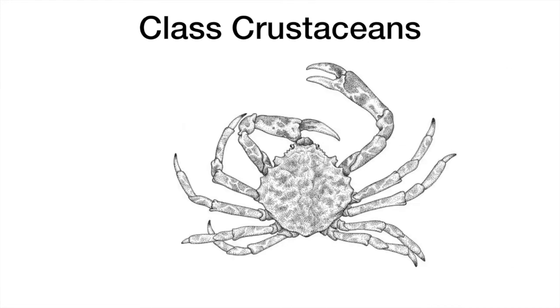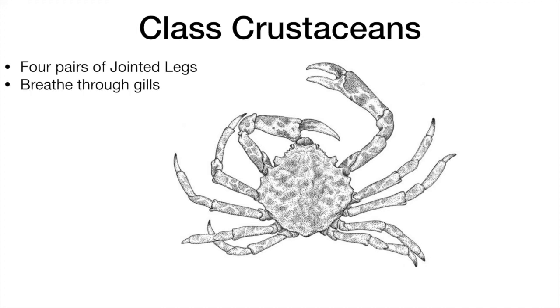Crustaceans, like crabs and lobsters, have more than four pairs of jointed legs and breathe through gills. Their body is also divided into a cephalothorax.